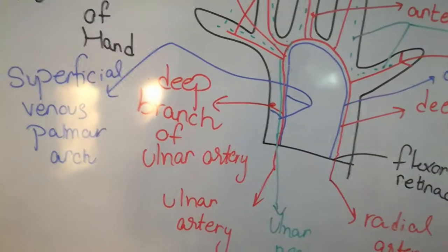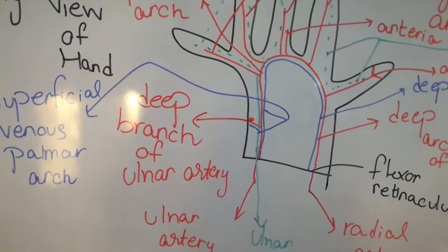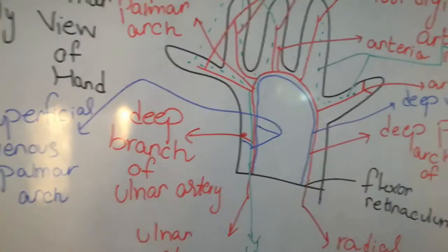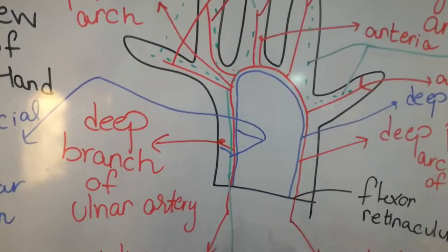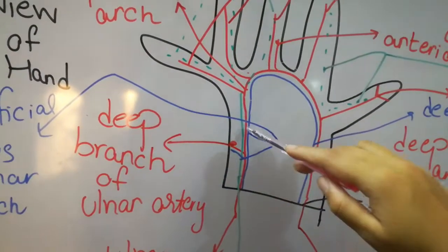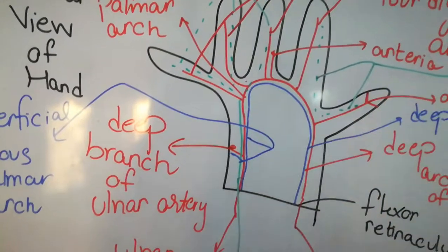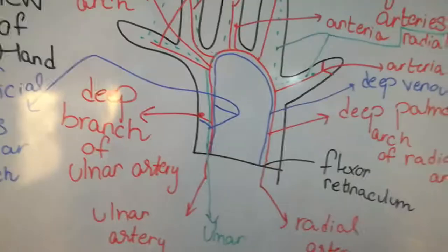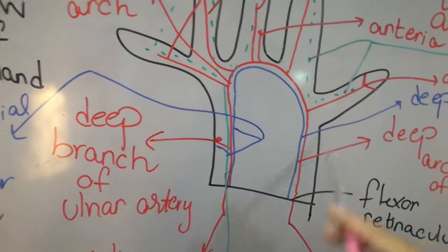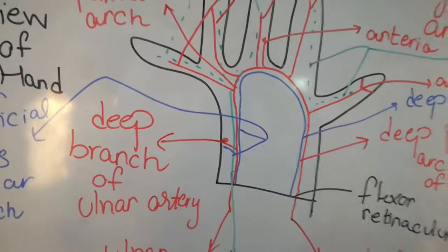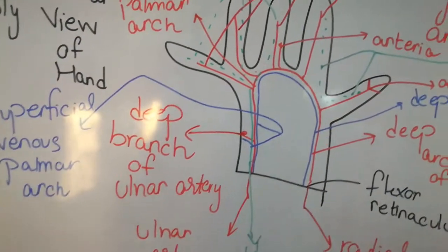The venous drainage is supplied from the superficial and deep venous arches, shown in blue, which run along with the arteries. Wherever the arteries are, there are also superficial and deep venous arches that drain the blood.